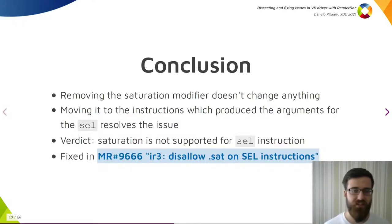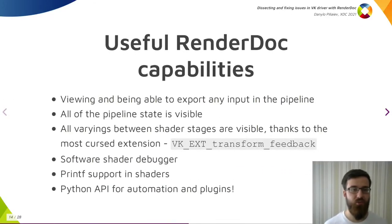This concludes my example. And as I said, the steps I followed are applicable to many issues you may face. What are the other useful RenderDoc capabilities? The most useful for us are, firstly, being able to view and export any input to the pipeline. Vertices, UBOs, SSBOs, textures, everything you may want. Possibility to inspect the state of any shader stage, to inspect varyings between each shader stage. This varyings inspection is possible thanks to the most cursed Vulkan extension, VK_EXT_transform_feedback. Next one, Software Debugger for SPIRV, is a relatively recent addition, and as we have seen, it is very effective, allowing to find the issue without resorting to making and opening the capture on another GPU.